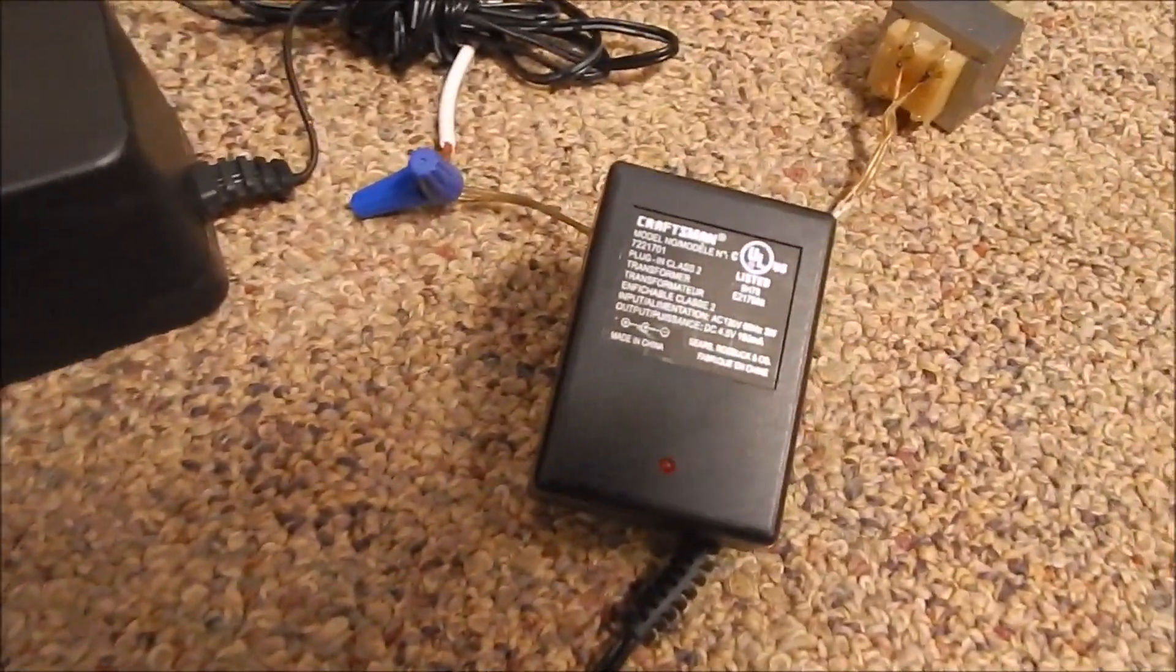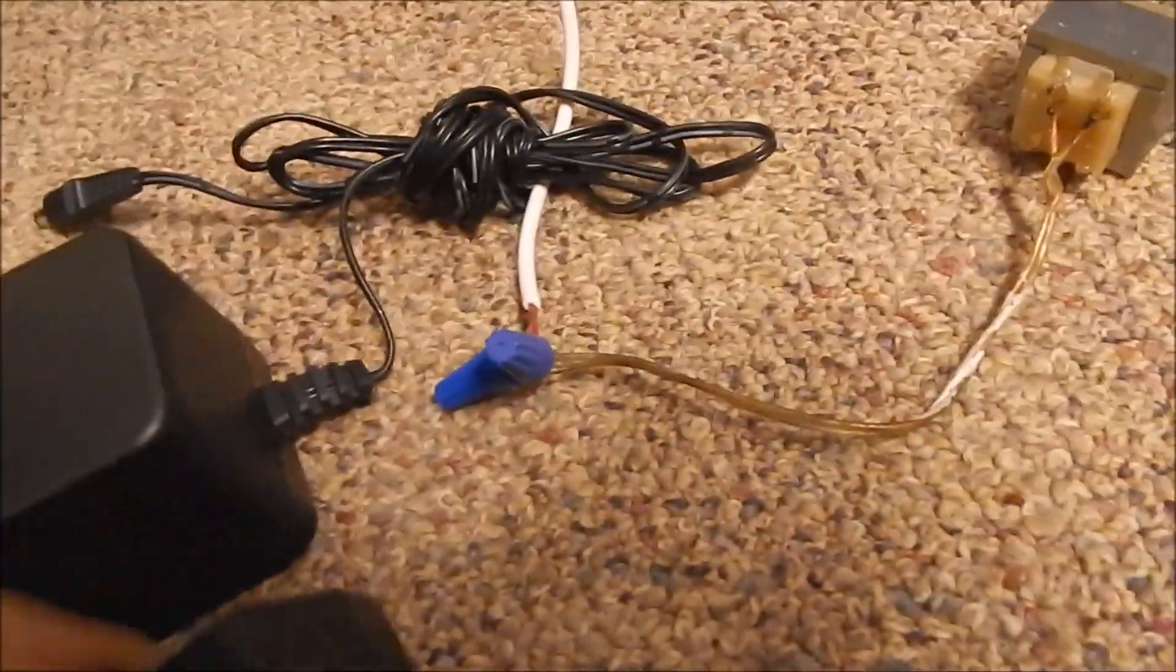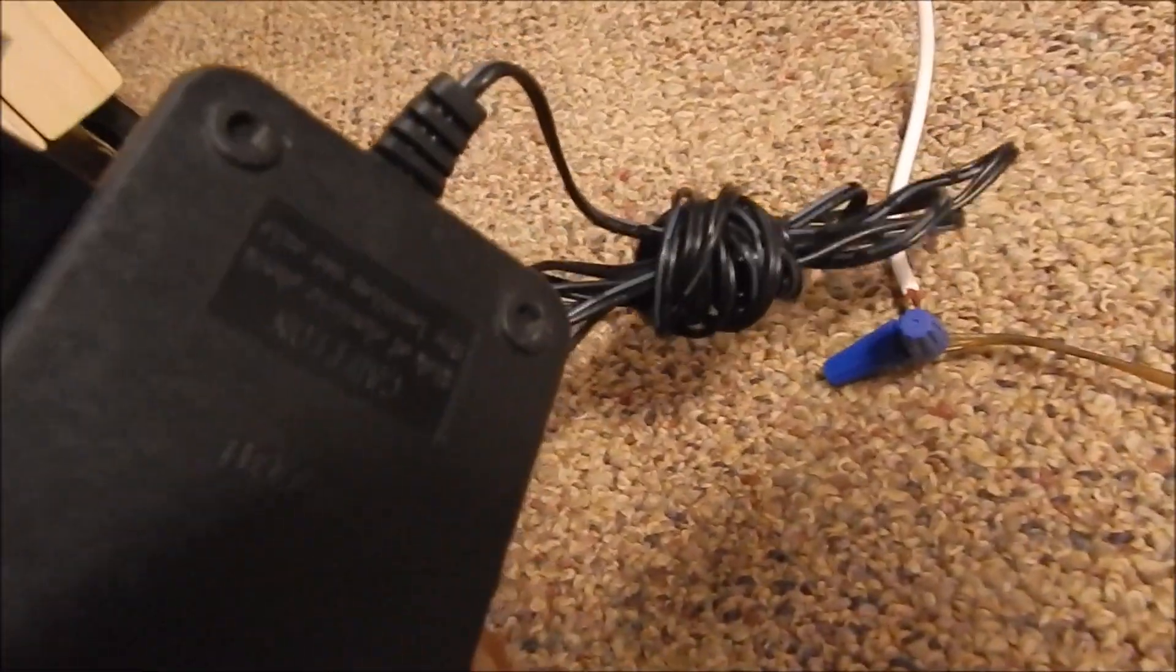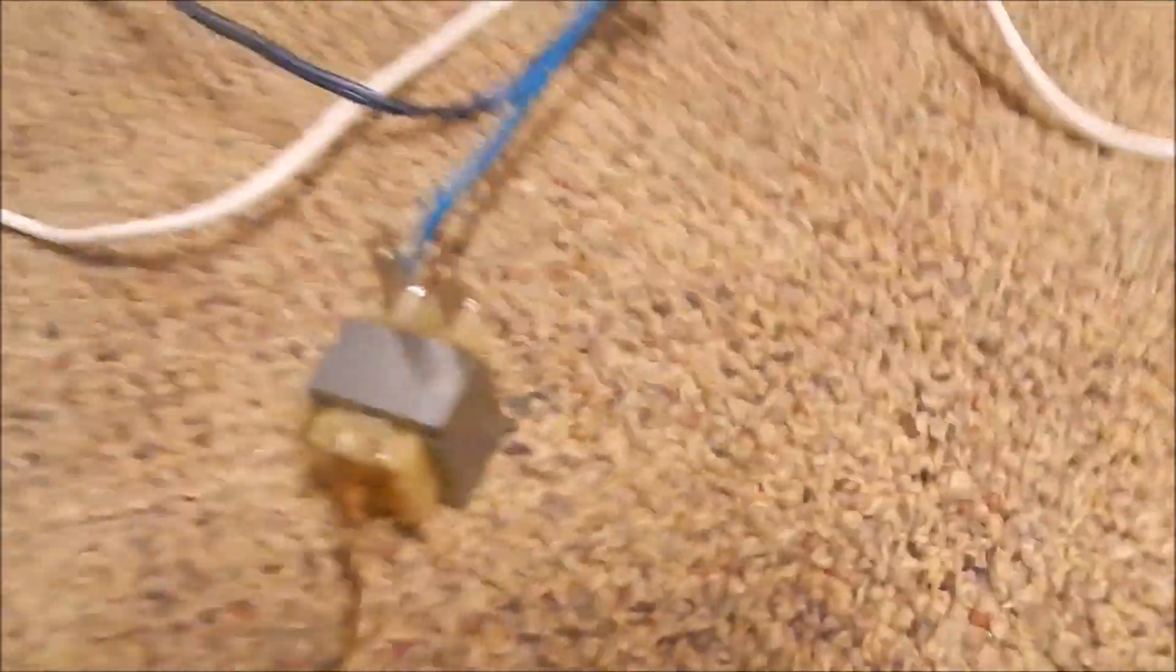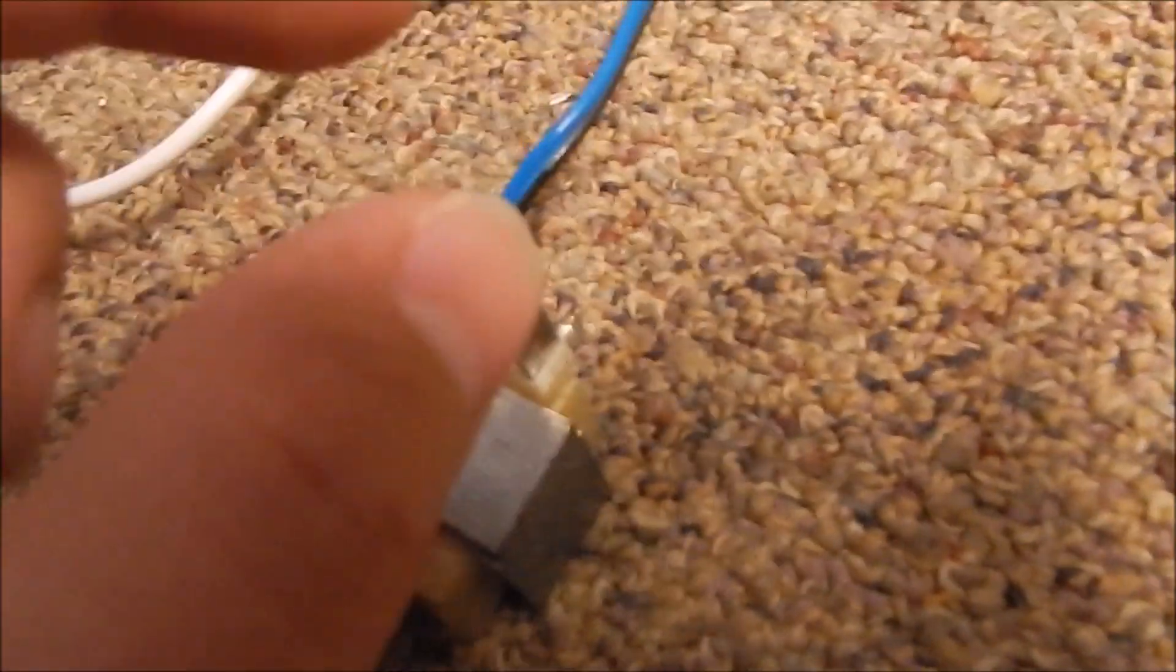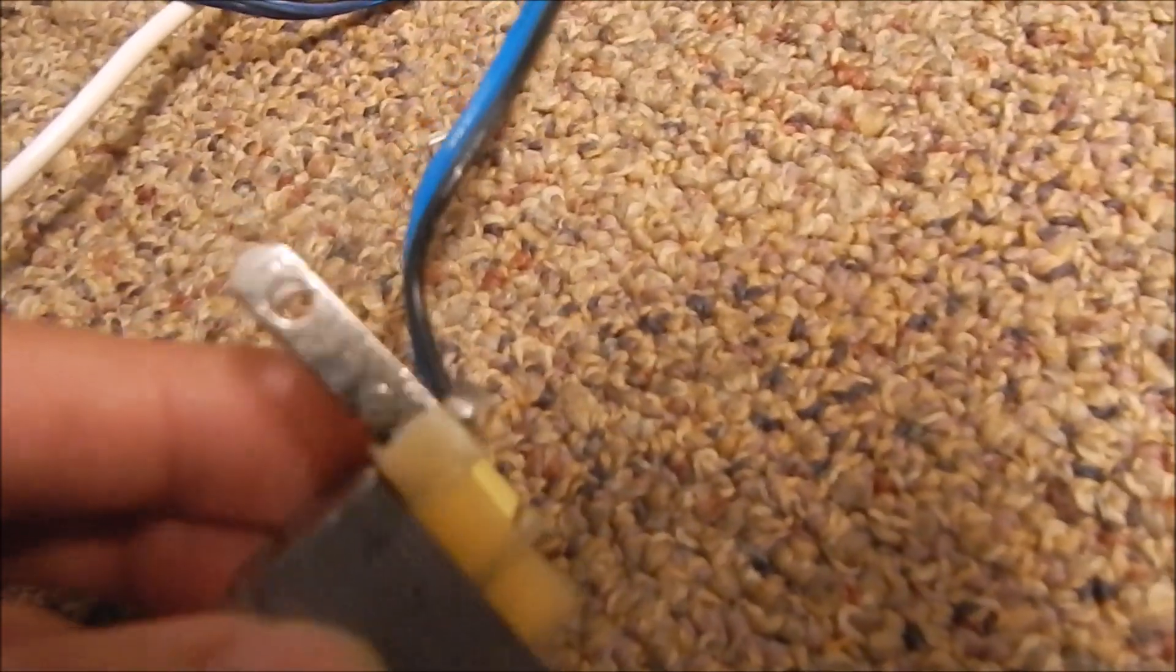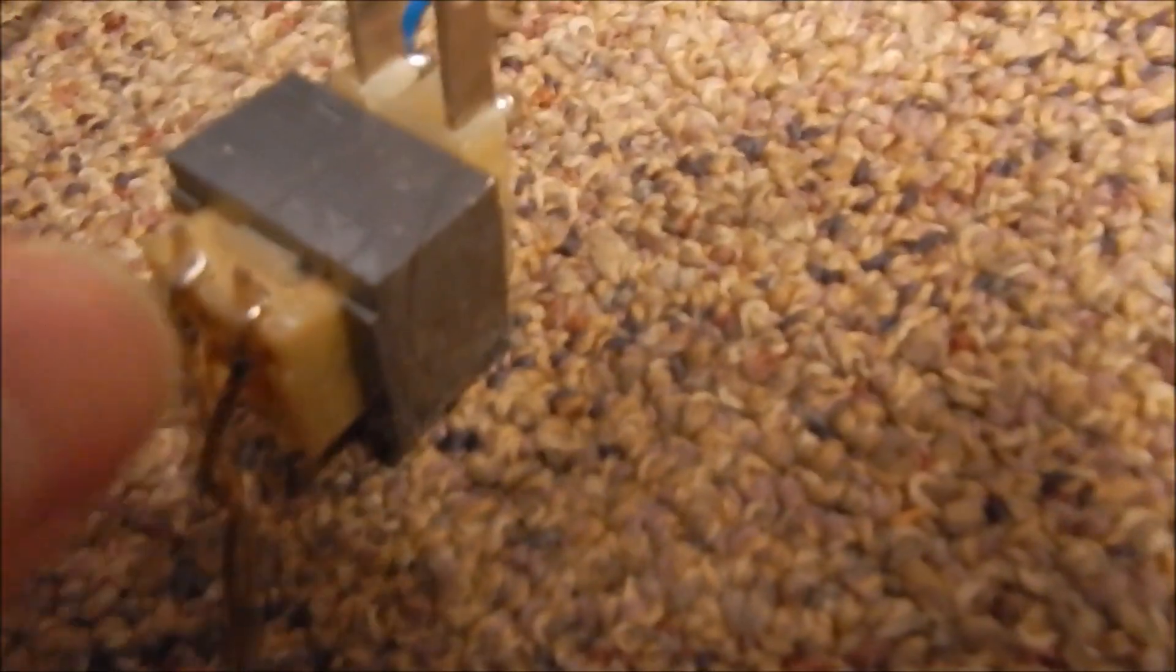Sometimes you can find them in old alarm clocks, old beat up boom boxes. They're all over the place, you just gotta look in old electronics. I have dozens of these around here because people have given me boxes and boxes of cords over the years. You can tell by the prongs here. I will cut these prongs off with a Dremel tool.